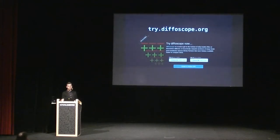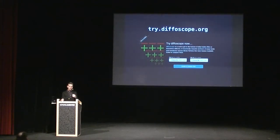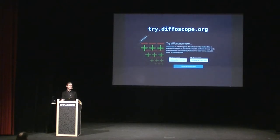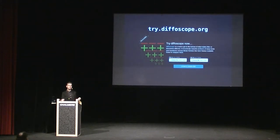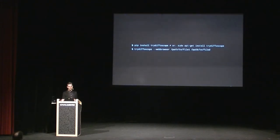To get started with Diffoscope, the quickest and easiest thing is to go to try.diffoscope.org. This is a web interface where you just upload two files and it runs Diffoscope on a remote server in a sandbox environment and gives you the difference as a nice HTML output and a link to the text format. One reason for using the web-based one is that Diffoscope has a large number of dependencies to support all the file formats — if you use the web-based version you get all the comparison tools without installing them locally. You can also use the try-diffoscope tool from the command line via pip or apt install.